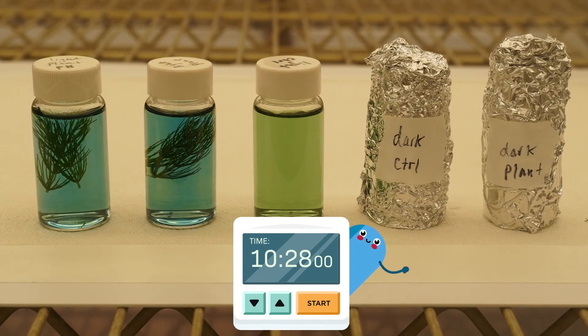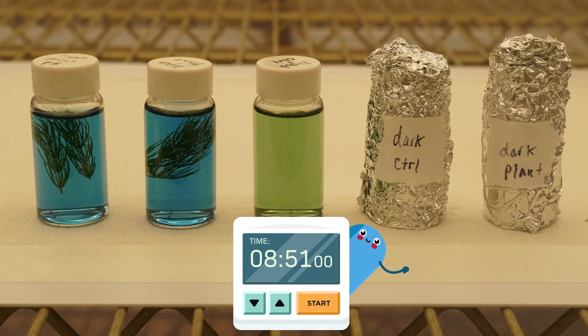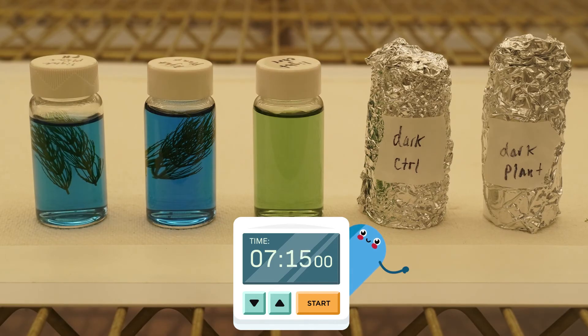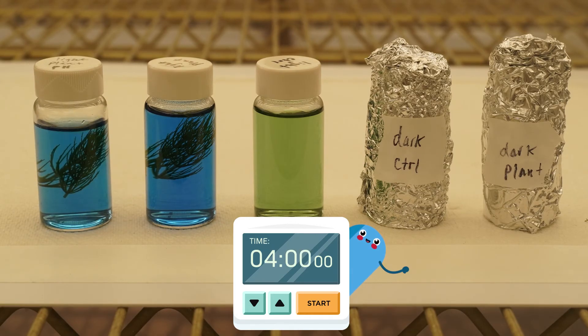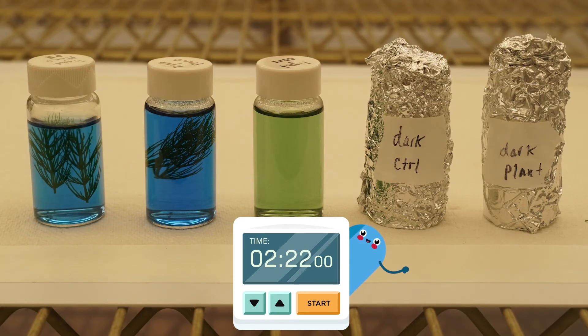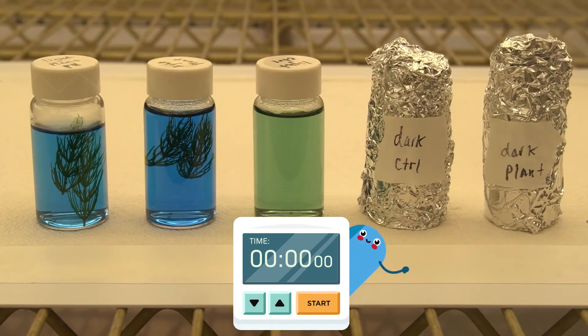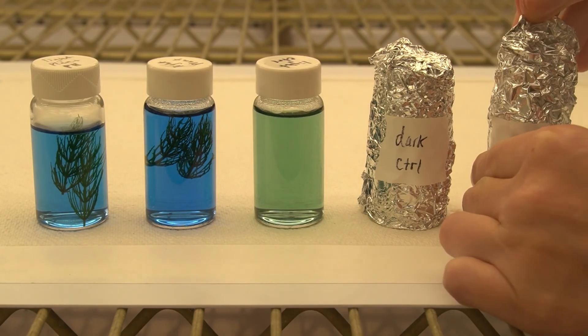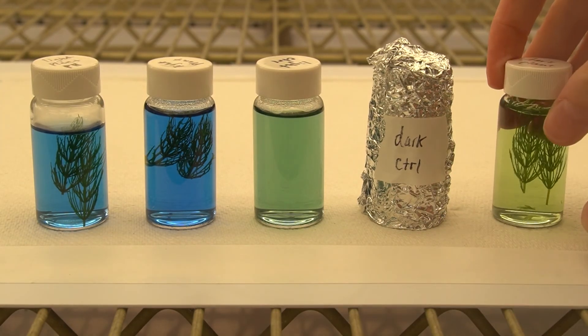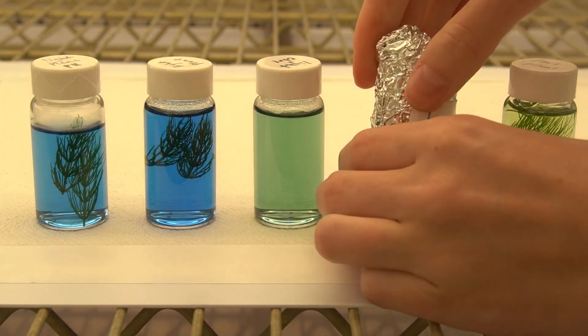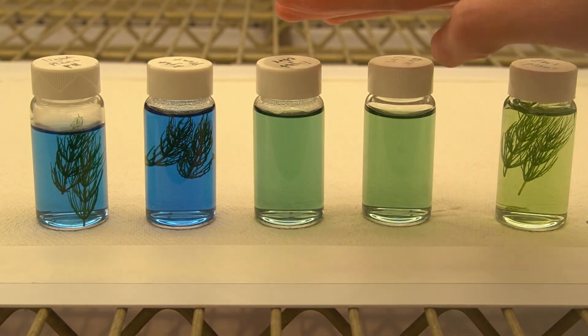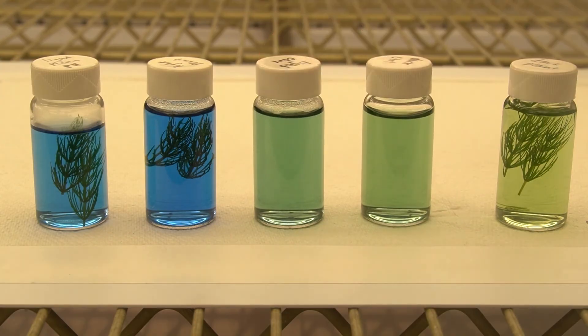Now let's go back to our vials and observe what the BTB indicator is doing over the course of 12 hours. Well, look at that! Okay, by the end of the experiment, the light plant vials have shifted from green to a rich blue color. Let's take a look at what happened to the dark vials. Alright, look at that! Our plant vial has gotten yellower! And for both light and dark treatments, our empty control vials stayed green.